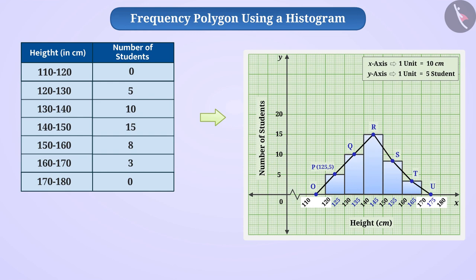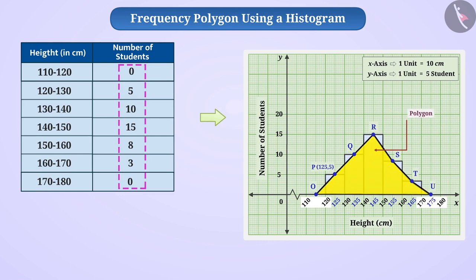This gives us figure OPQRSTU made of line segments. On careful observation, you will come to know that this shape is a polygon whose vertices represent the corresponding frequencies of class intervals. Since the frequencies of class intervals are represented as vertices of the polygon, we call it a frequency polygon. You can see that the triangles located outside the line graph can be arranged inside the line graph.